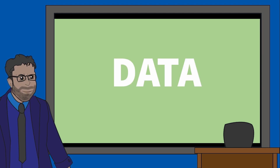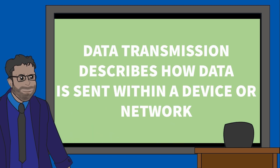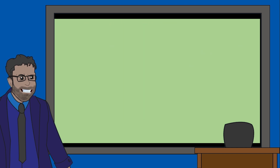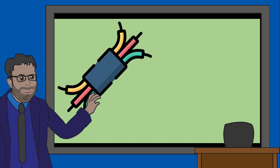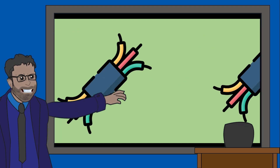What is data transmission? Data transmission describes how data is sent within a device or across a network. We can describe data transmission through two ways: the number of wires or the direction they travel in.